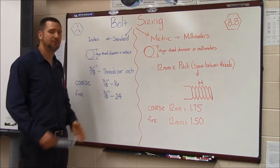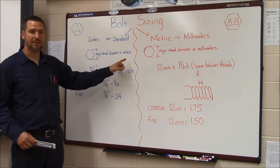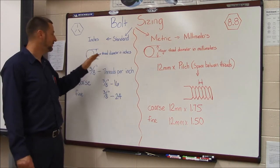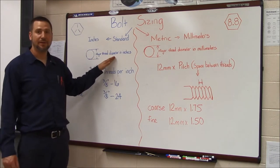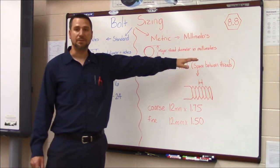So the first number that we're concerned with in either system is the major thread diameter. If it's in standard, it's the major thread diameter in fractions of an inch. If it's metric, it's the major thread diameter in millimeters.